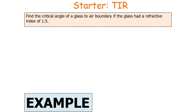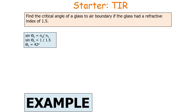For example: find the critical angle of a glass-to-air boundary if the glass has a refractive index of 1.5. Using sine theta c equals n2 over n1: n2 is air, so the refractive index is 1. Therefore sine theta c equals 1 over 1.5, giving theta c equal to 42 degrees. So anything above 42 degrees will lead to total internal reflection.